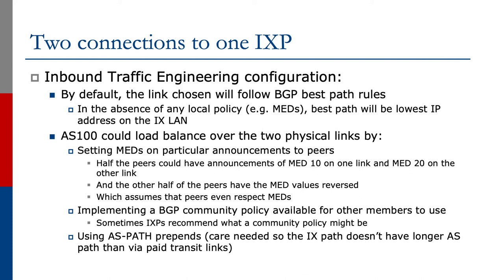AS100 could balance over the two physical links by setting MEDs on particular announcements to peers. Half the peers could have announcements of MED 10 on one link and MED 20 on the other link, and the other half of the peers could have the MED values reversed. This all assumes that the peers even respect MEDs, which is getting less and less likely these days. The other way we could do it is by implementing a BGP community policy which is available for other members to use.